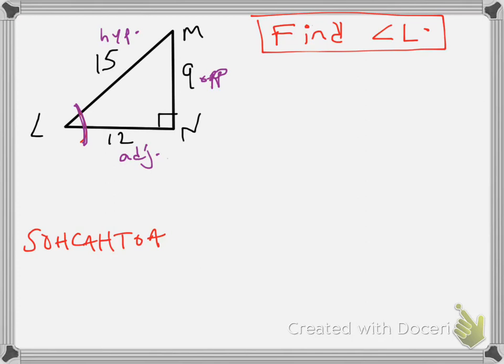So I'm going to use the sine ratio. Sine of angle L, which we don't know what it is, sine of angle L is equal to opposite, looking back at SOHCAHTOA, opposite over hypotenuse, 9 over 15. Well, 9 over 15 is a pretty simple ratio, that's 0.6. Sine of L is equal to 0.6.